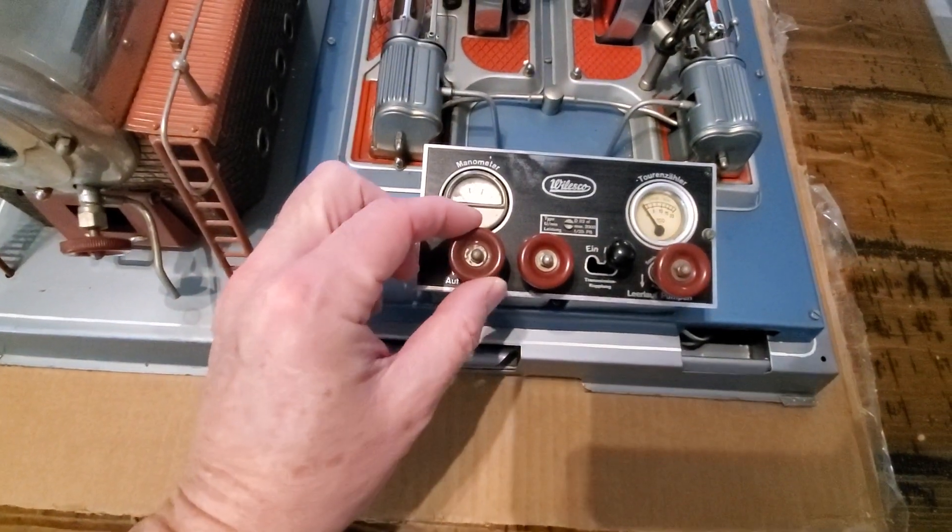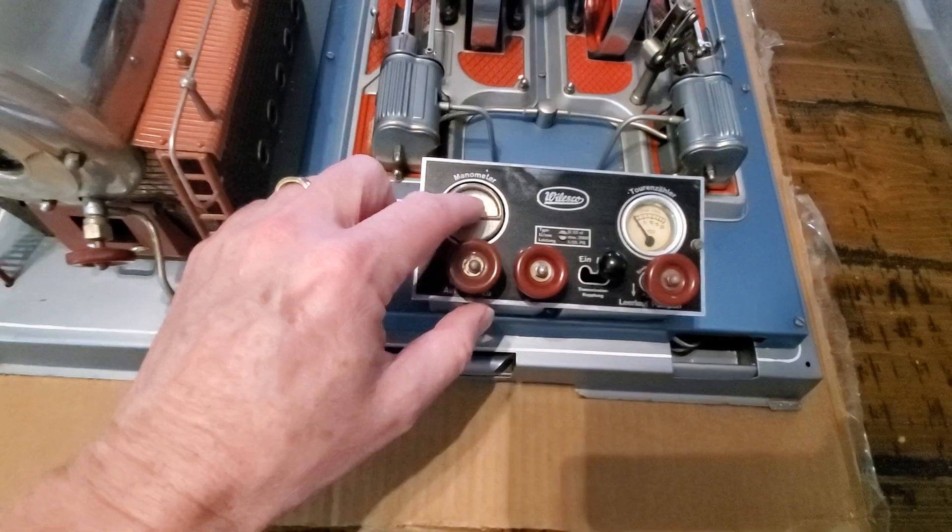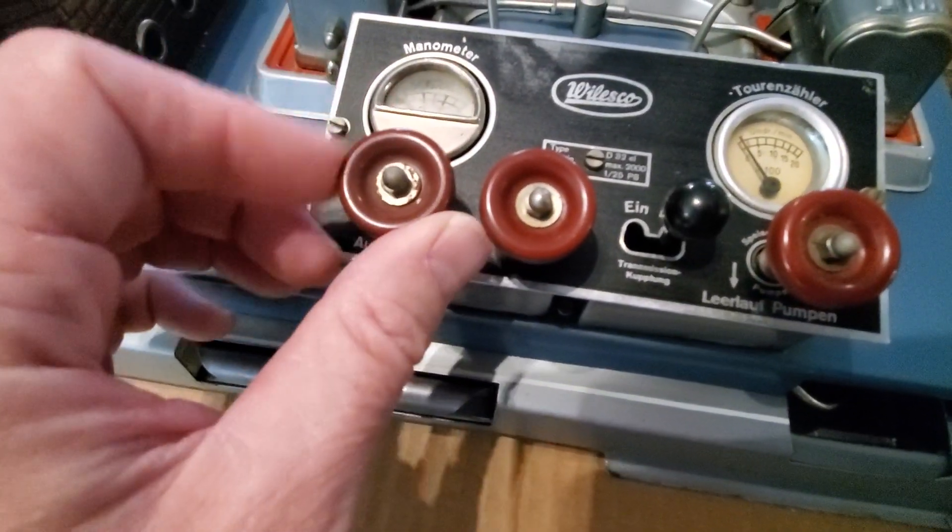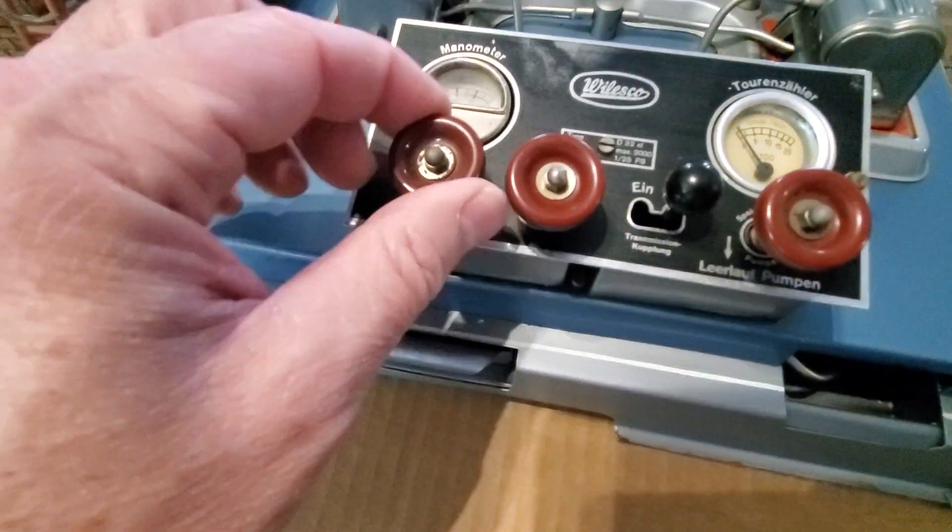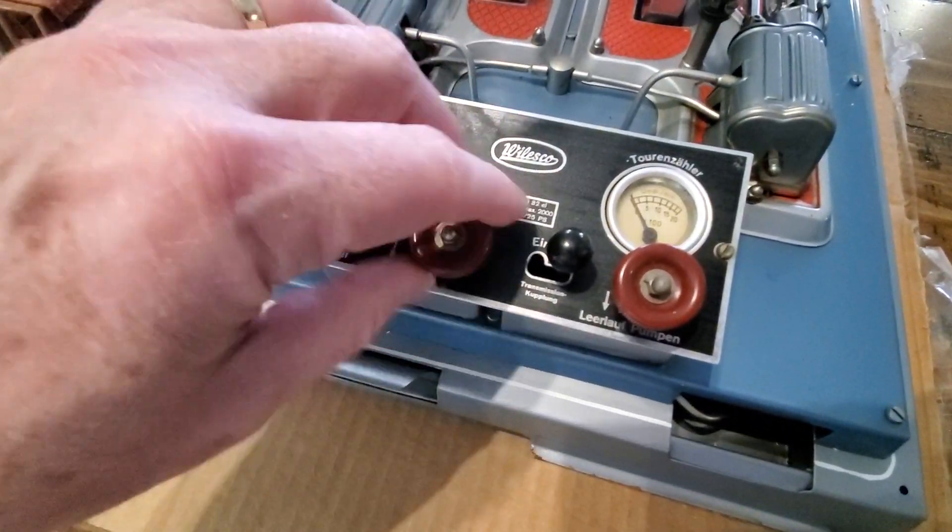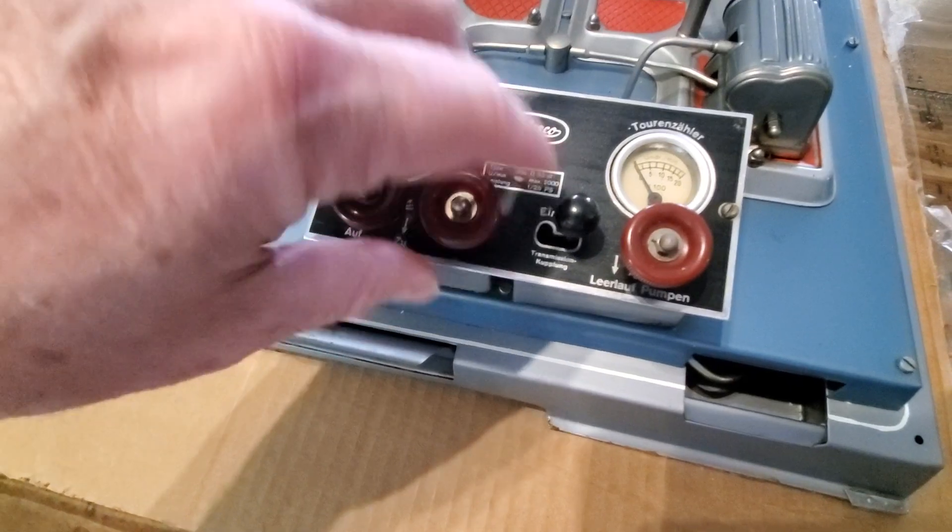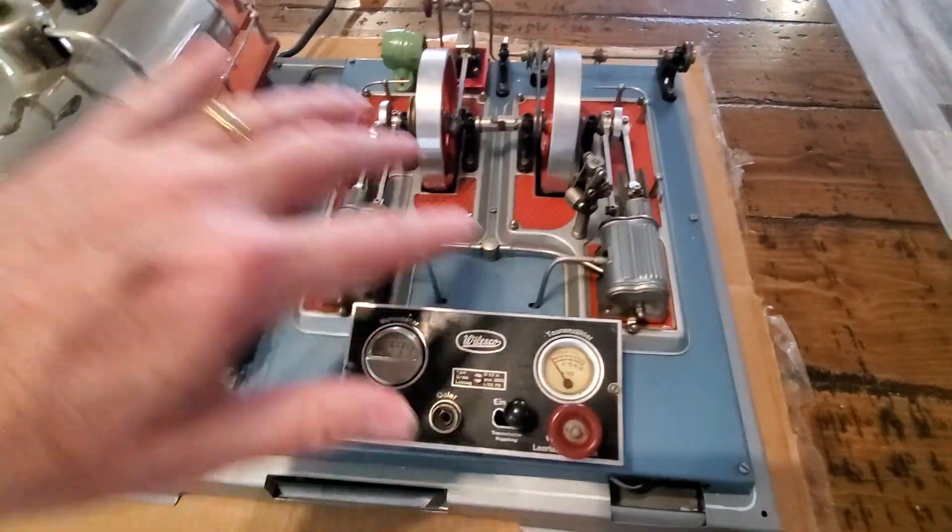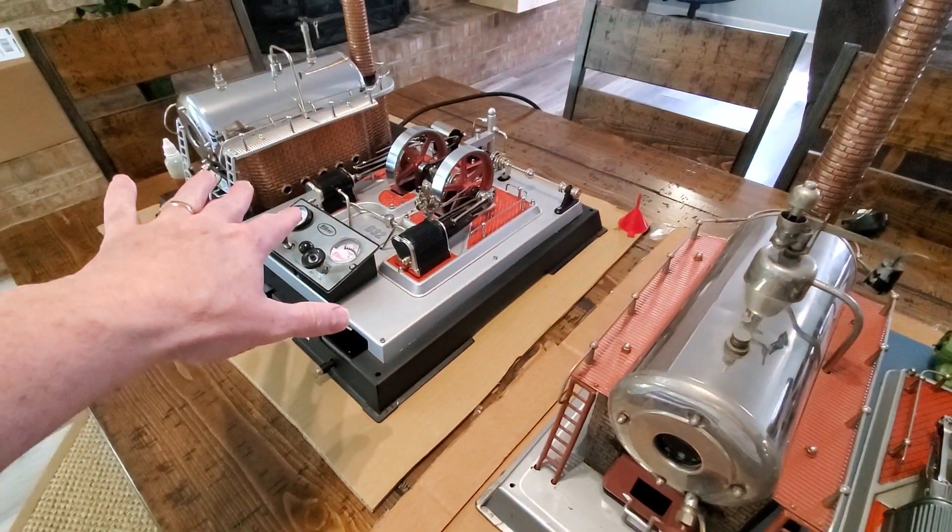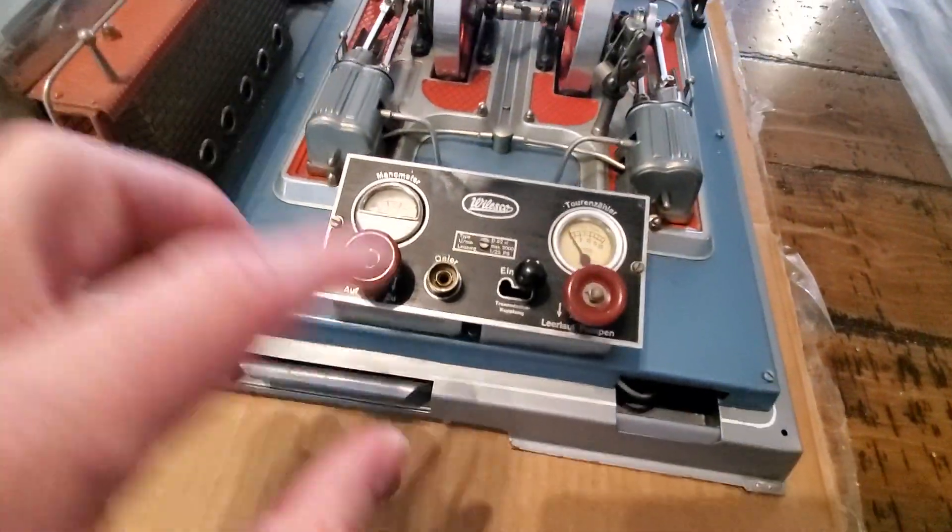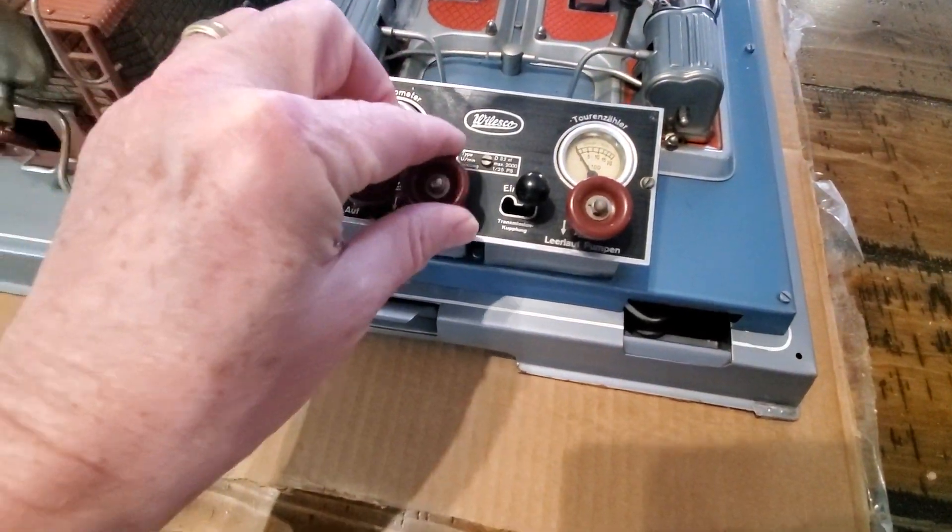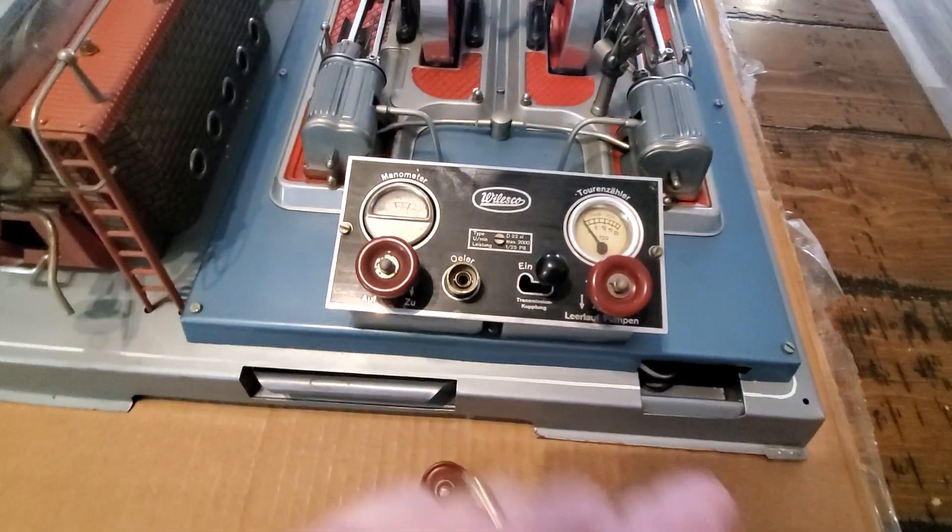This is basically an RPM or pressure gauge. This controls the throttle. You open it up to speed it up, close it to slow it down. This right here is an oiler and you put oil in here to lube up the system, and it's the exact same thing as that one in the process, basically in the mechanical aspect of how it works.